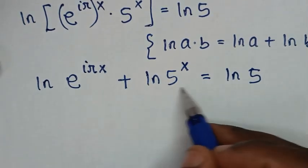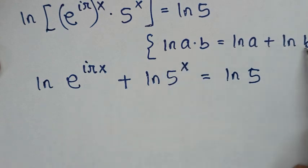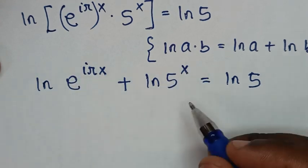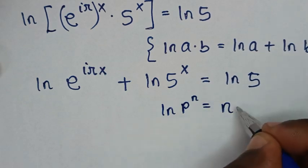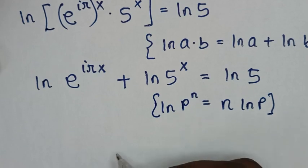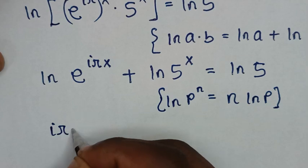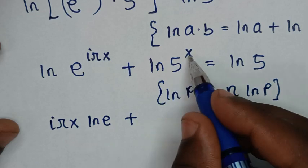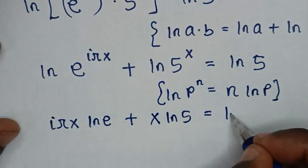We'll apply the power rule. The power rule states: ln of p to the power of n equals n times ln of p. So the power moves to the base: iπx times ln of e, plus x times ln 5, is equal to ln 5.